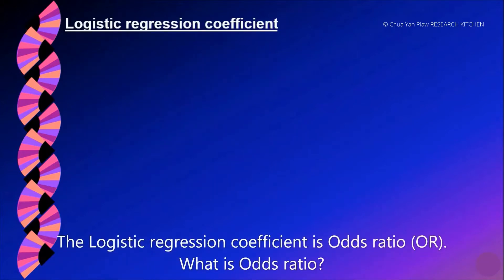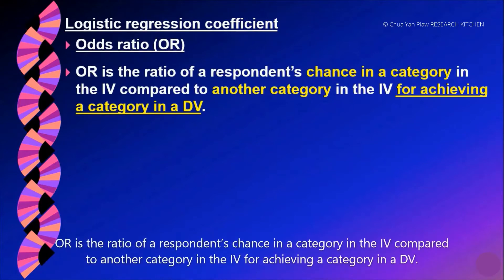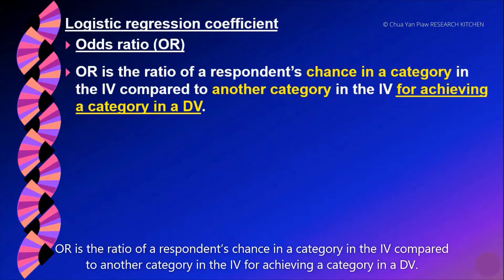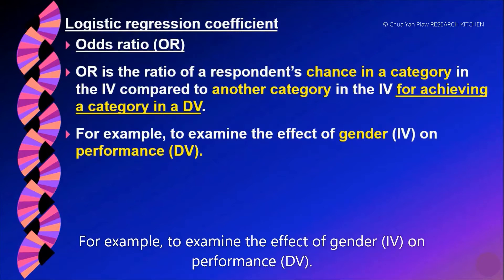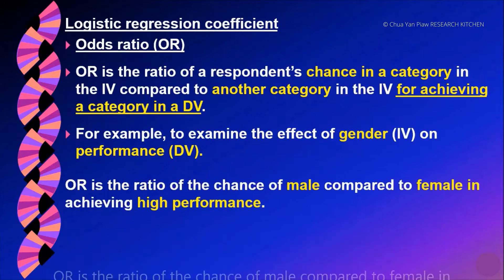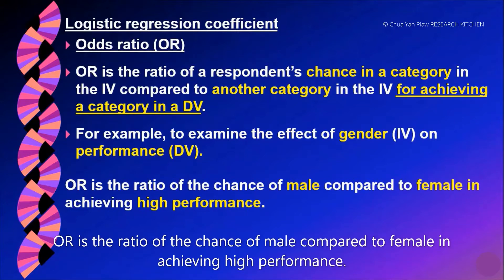The logistic regression coefficient is odds ratio. But what is odds ratio? OR is the ratio of a respondent's chance in a category in the independent variable compared to another category in the independent variable for achieving a category in a dependent variable. For example, to examine the effect of gender on performance.